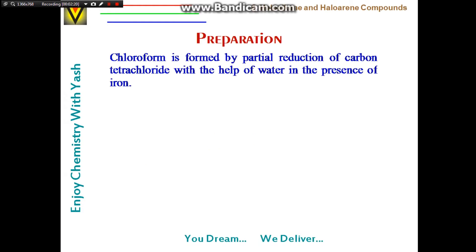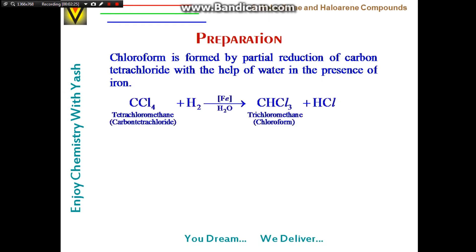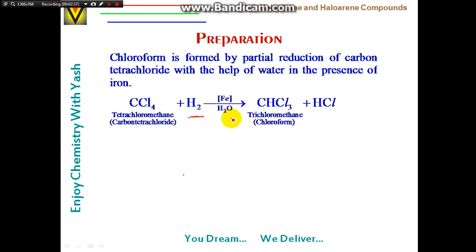Chloroform is also found by partial reduction of carbon tetrachloride with water in the presence of iron. Iron reacts with water, slowly releasing hydrogen, which reduces CCl₄ to give trichloromethane (chloroform).